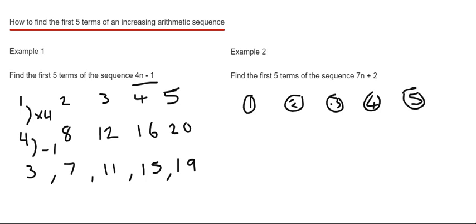So again if we just think about what our formula means. 7n means we need to times the numbers by 7 and then add on 2. So if we times our numbers by 7 first of all,